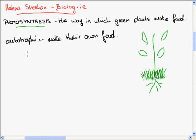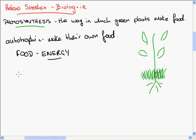All organisms need food, and we need food for things like growth, repair, defence, and energy. Energy is the one I'm going to focus on here — we need food for energy. Plants can make their own food, so where do they get the energy from? From the sun. A plant has the ability to trap the sun's energy and turn it into food.